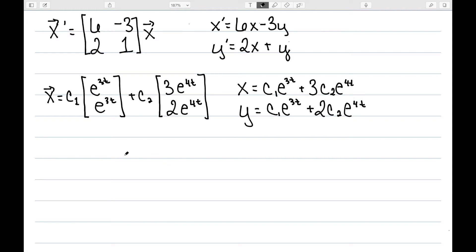Now let's look at actually verifying this solution. So let's start with the x's. I'm claiming x' is equal to 6x - 3y. Let's start with the left-hand side, the x prime. So I'm going to come over here and take the derivative of this. The derivative of c1·e^(3t) would be 3c1·e^(3t). The derivative of 3c2·e^(4t) would be 12c2·e^(4t).